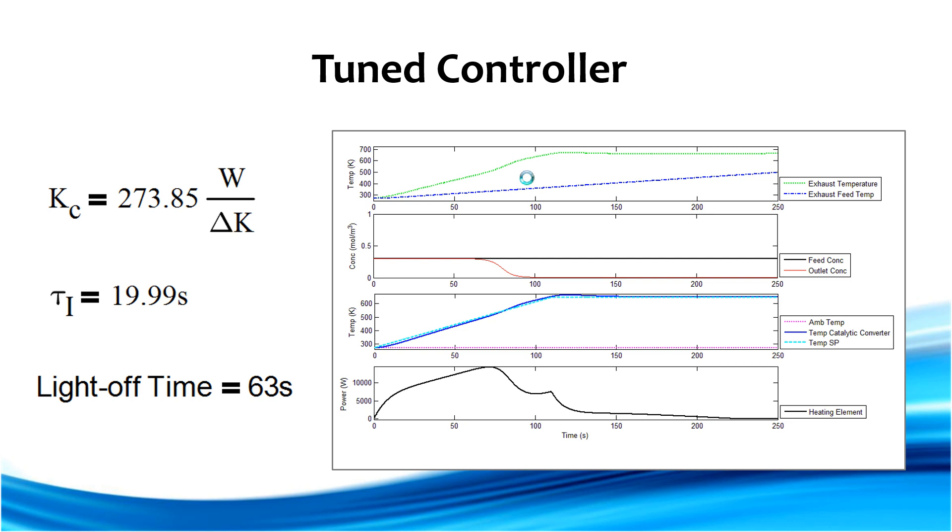So our final time constants we ended up using were 273.85 W/ΔK and 19.99 seconds for our gain and time constant respectively. Our light-off time that we achieved was about 63 seconds as you can see here on the model. And you'll also notice here on the bottom that our power rating in order to achieve this went up to about 15,000 watts.